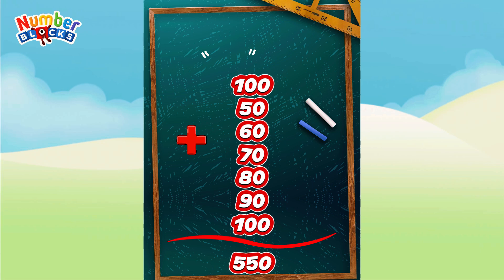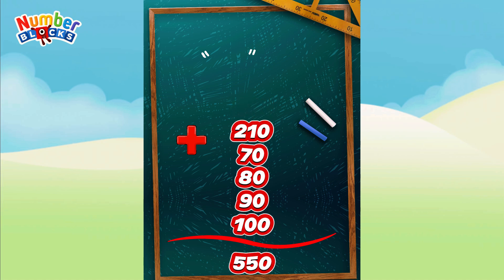100 plus 50 is equal to 150. 150 plus 60 is equal to 210. 210 plus 70 is equal to 280. 280 plus 80 is equal to 360.